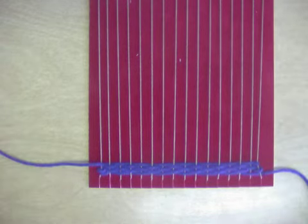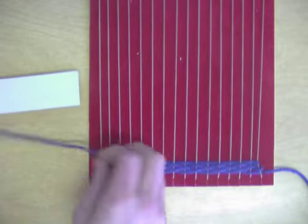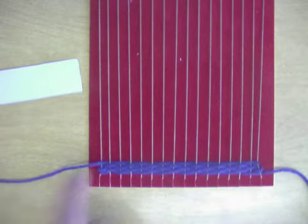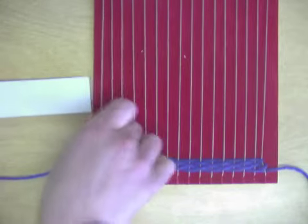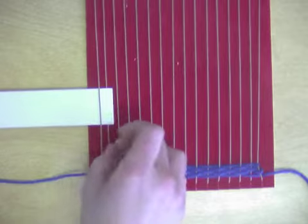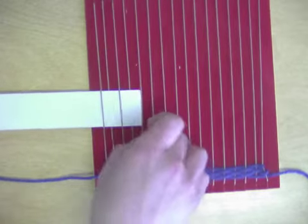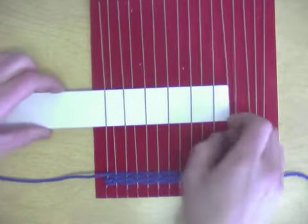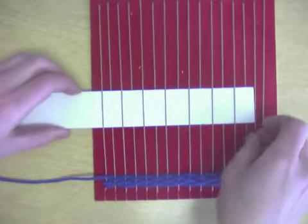To start a new color, I'd start weaving just like I would have any other rows. I'll begin by checking to make sure that my row is going to be opposite of the last. Since I ended with over, I'm going to start my row with under. I'll continue to go under over all the way across my entire project.